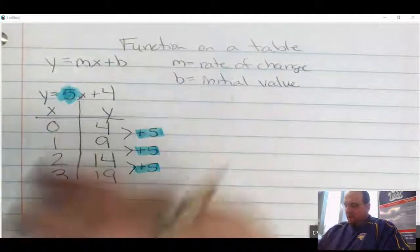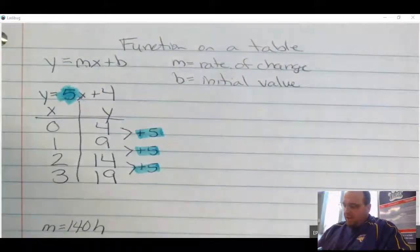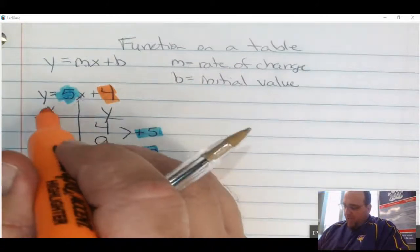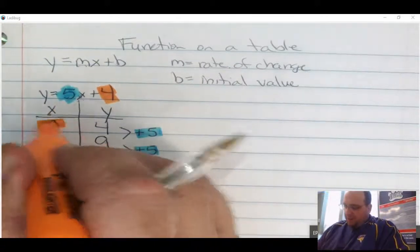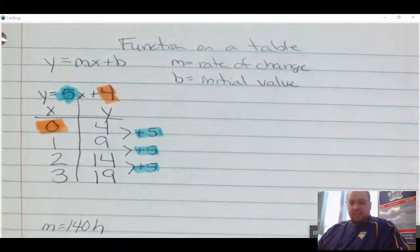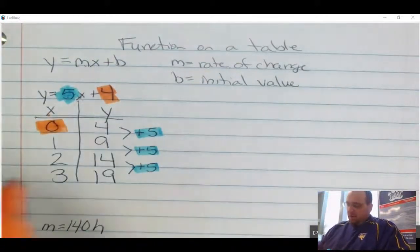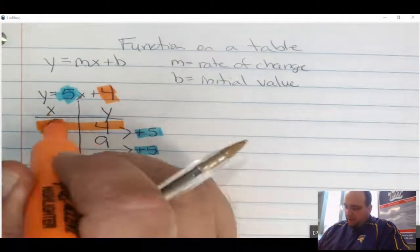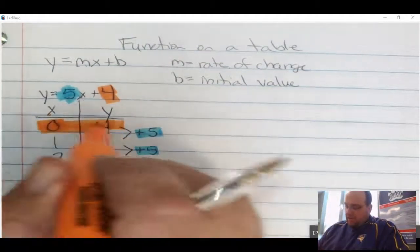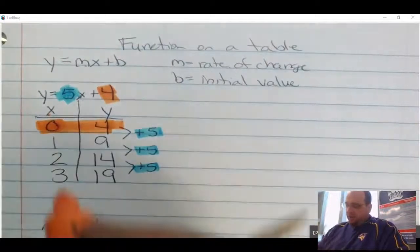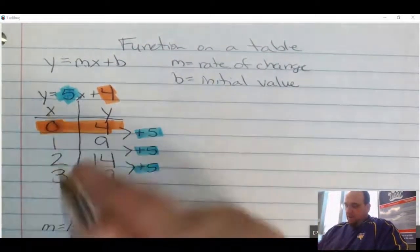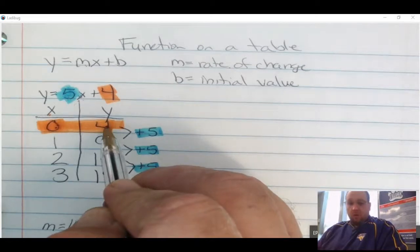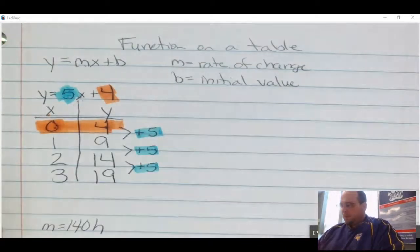Where do you find the initial value? The initial value can be found where x is 0. So I look for where x is 0, and in this case I find the initial value of 4. Because x is 0 there, I can find that the initial value, or where it started, was 4.